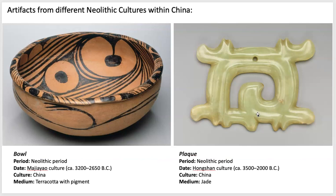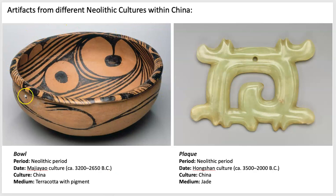Here are some artifacts — a bowl from around 3200 to 2600 BCE and a plaque from the same Neolithic period. You can already start to see the craftsmanship: the painting on the inside and outside, a specific type of paint applied to a well-structured bowl with a lip, very round. You start to wonder what types of tools they had already developed during this time period.